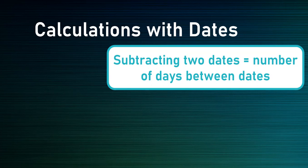If you subtract two dates, it will always give you the number of days. If you want to convert that to months or years, you'll have to do some mathematics. For example, if you want to find how many years there are between two dates, you subtract them to get the number of days, then divide by 365.25 to get the correct value.